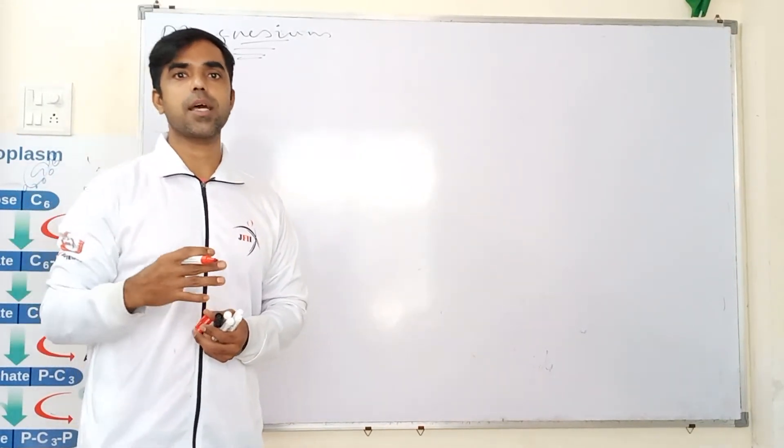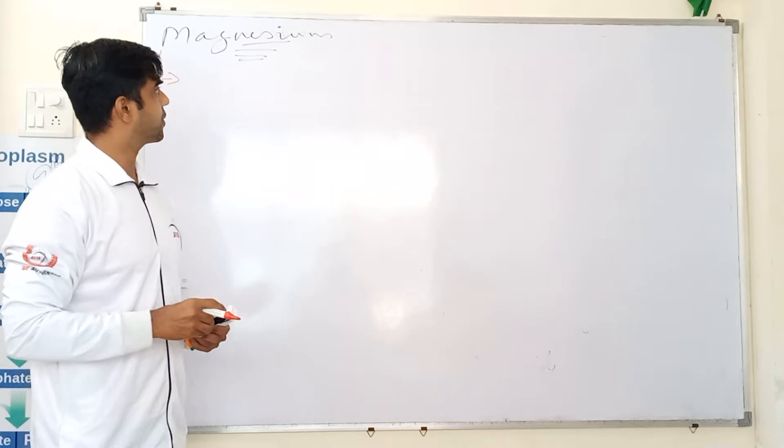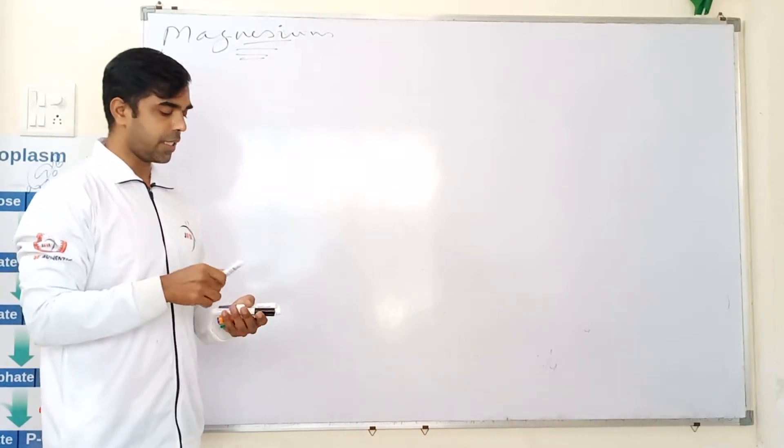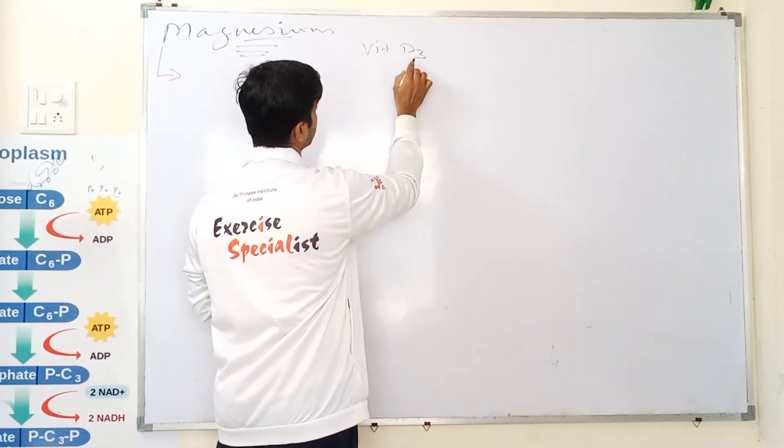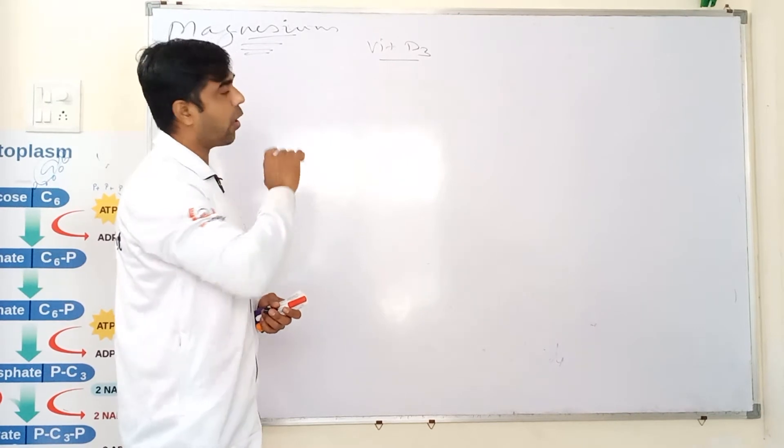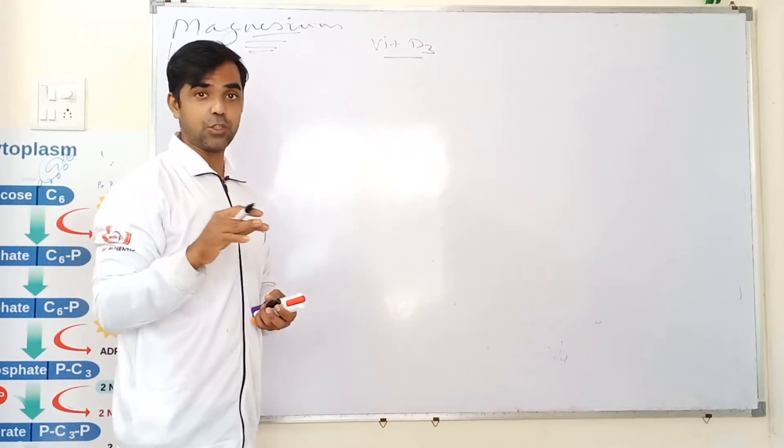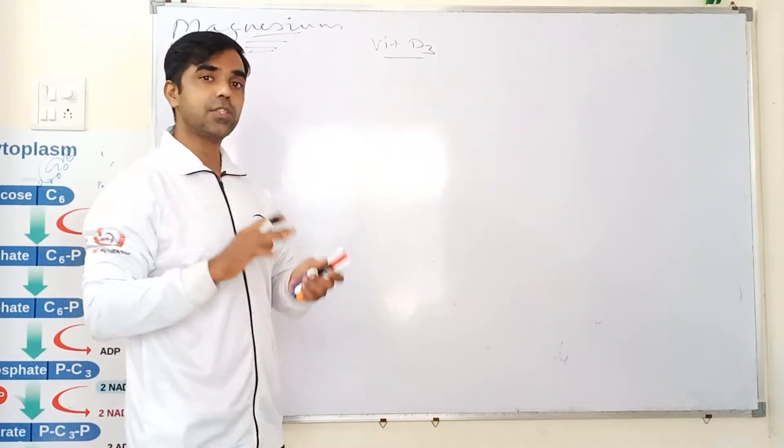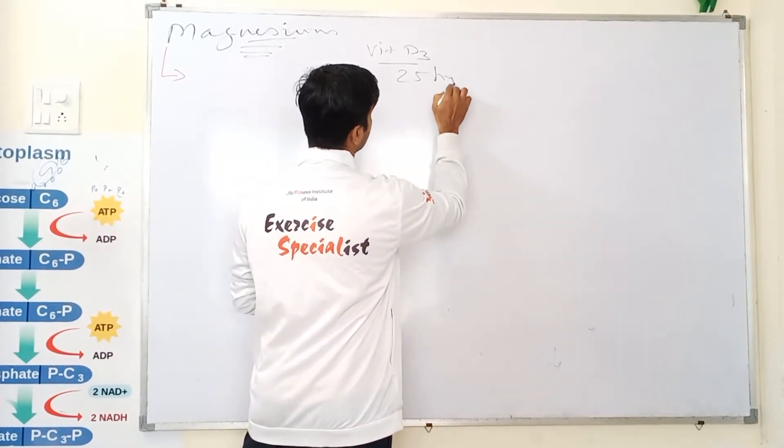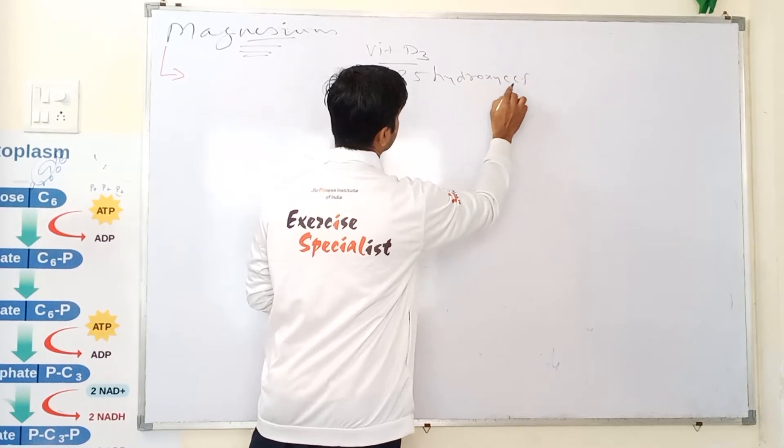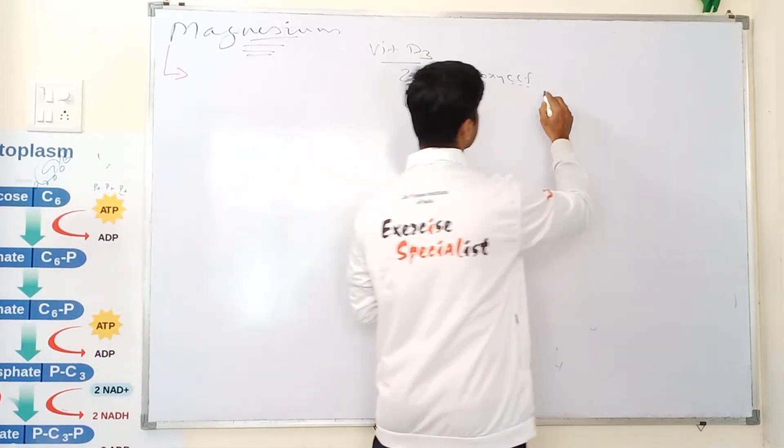Mature the hormones and it plays a very important role. Let me explain it. We have already studied vitamin D3. And I have already explained on YouTube how this vitamin D3 is matured. Before it gets matured, it has its storage form, 25-hydroxy cholecalciferol. Right. This reaction is done in liver.